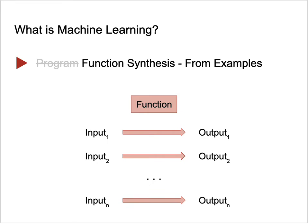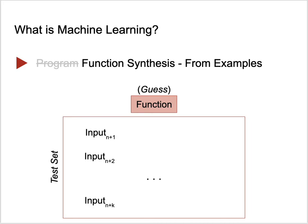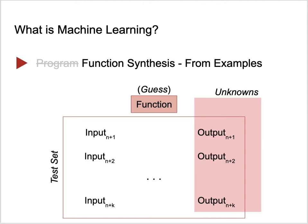We have n such examples, each formed by an input and an output. This part of the dataset used to train our model is called the training set. By looking into this training set, we try to come up with an approximation of the target function — not necessarily a perfect one. The goal is to estimate well the behavior of the function on unknown inputs. This collection of data where we test the guessed function is called the test set.